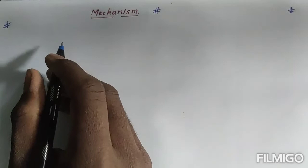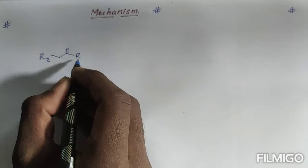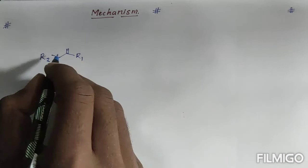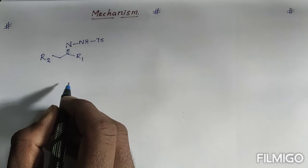Now let us learn the mechanism of the Shapiro Olefination Reaction. In the general reaction we have tosyl hydrazone. For convenience, I write it as R1 on one side and R2 on the other, with nitrogen here and one more nitrogen bearing a hydrogen and a tosyl group.